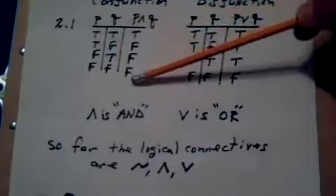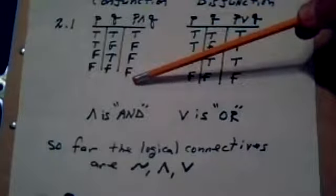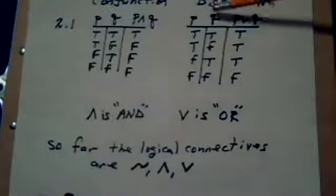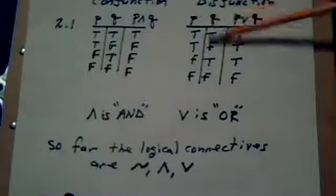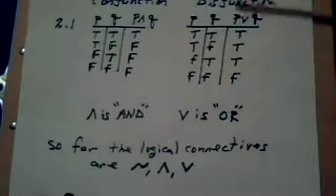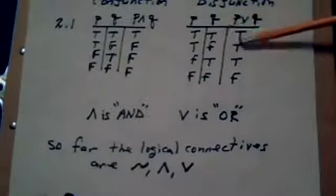Now the disjunction—that's your 'or.' True or true is true. True or false is true. False or true is true.